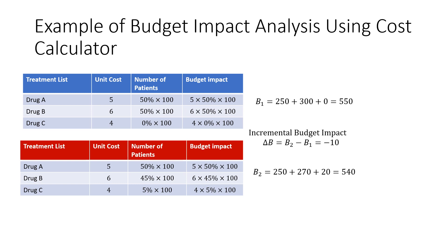Here's a worked example of budget impact analysis using the cost calculator approach. We have our list of drugs and the number of patients on each one. The number of patients is defined by a total population that is affected and the proportion on drug A, drug B, or drug C. We add up the total cost associated with each scenario. What we see is that if there's a 5% shift to drug C — 5% of that population — we actually end up with a cost-saving scenario. So a negative budget impact means we're going to have a budget saving. This is a very simple, though highly stylized, approach to budget impact analysis.